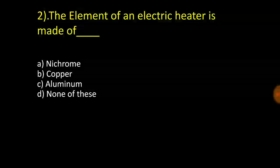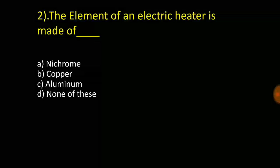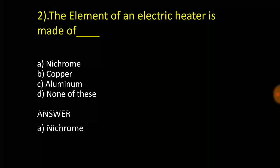The element of an electric heater is made up of: nichrome, copper, aluminum, or none of this. And the answer is nichrome.